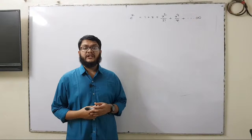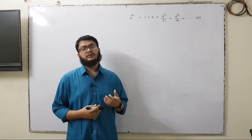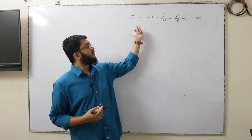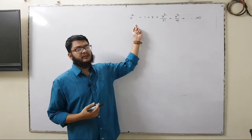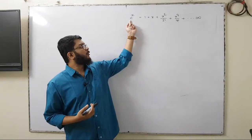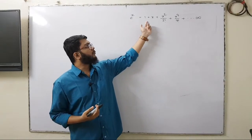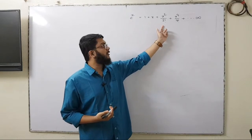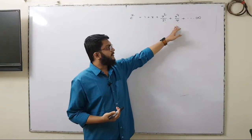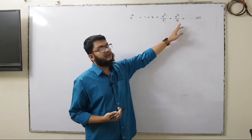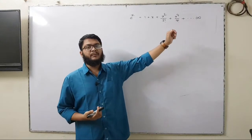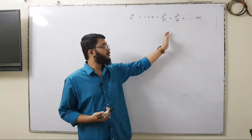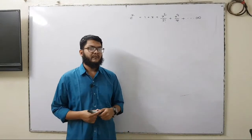Before we move on to solving some problems, we first need to understand this expansion. e to the power x is equal to 1 plus x plus x squared by 2 factorial plus x cubed by 3 factorial, and the next term will be x to the power 4 divided by 4 factorial, all the way to infinity.